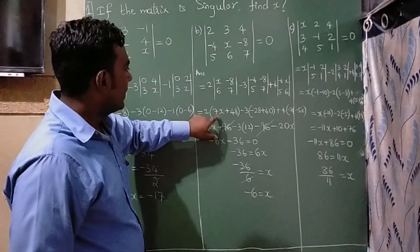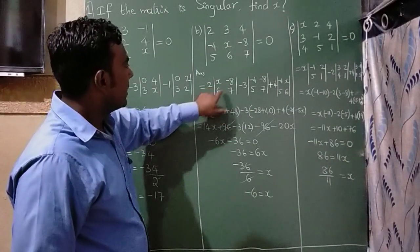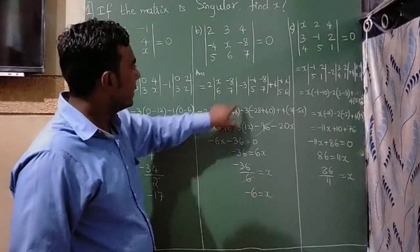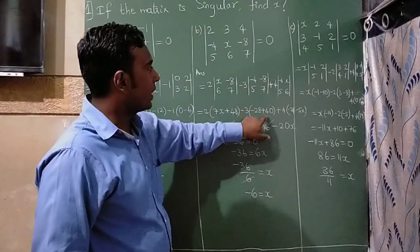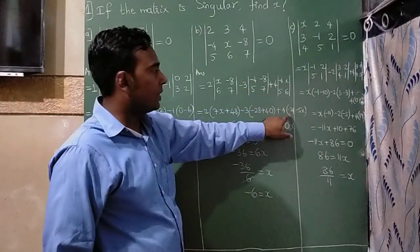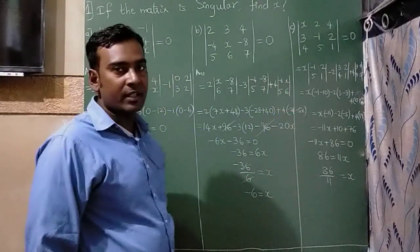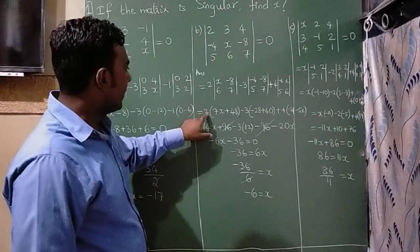Now, multiply x into 7 is 7x. Minus into minus is plus 6 times 8s are 48. 4 times 7s are 28. 5 times 8s are 40. 4 times 6s are 24. 5 into x is minus 5x.